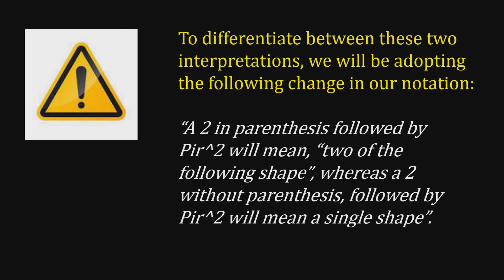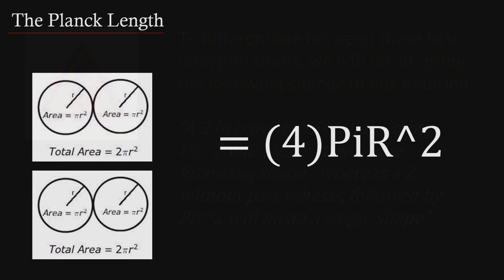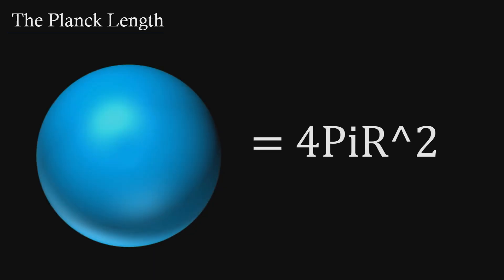To differentiate between these two interpretations, we'll be adopting the following change in our notation. A two in parentheses followed by πr² will mean two of the following shape, whereas a two without parentheses followed by πr² will mean a single shape. As an example, four in parentheses πr² will equal four shapes of the volume of a two-ball, where four without parentheses πr² will equal the single surface of a two-sphere.